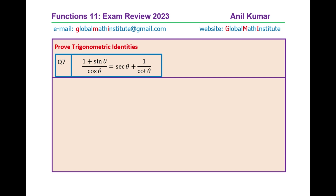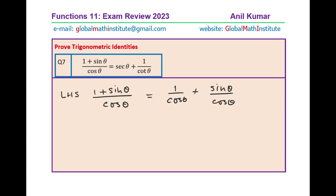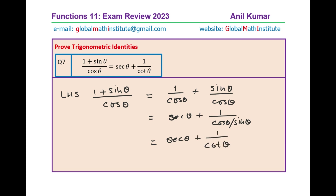The next question is (1 plus sin theta) over cos theta equals secant theta plus 1 over cot theta. This is very simple. We begin with the left hand side: (1 plus sin theta) over cos theta. Just write it as 1 over cos theta plus sin theta over cos theta. We get 1 over cos theta, which is secant theta, plus sin theta over cos theta, which is tan. We need cotangent, which is the reciprocal of tan. So we can write this as secant theta plus 1 over cot theta, which is the right hand side.